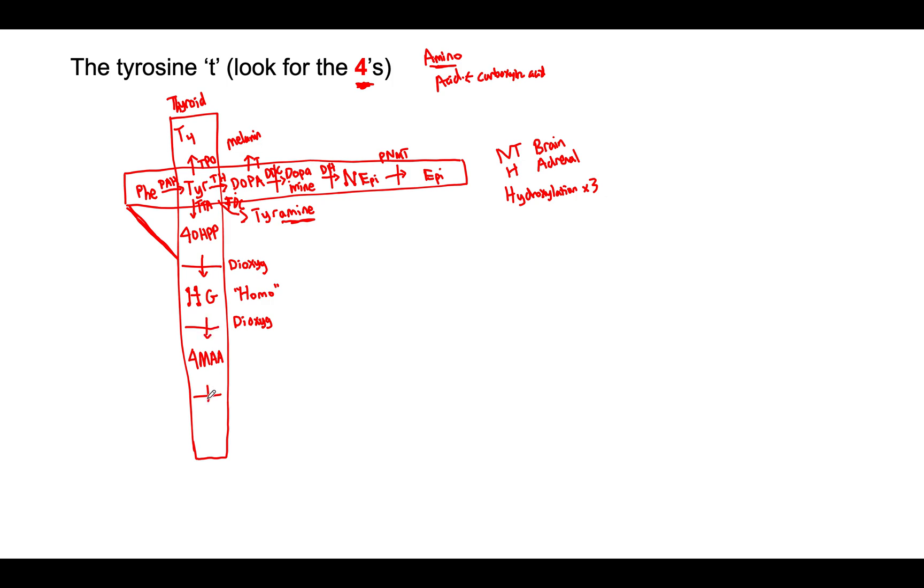Now this molecule here is 4-maleylacetoacetate, or 4-MAA. And this molecule gets isomerized into FAA or fumarylacetoacetate. So again, we have the same endings here, acetoacetate, acetoacetate. And the only difference, these are basically the same molecule. It just undergoes an isomerization by an isomerase. And again, the number 4, if you spell it out, F-O-U-R, F in four goes with F in FAA.